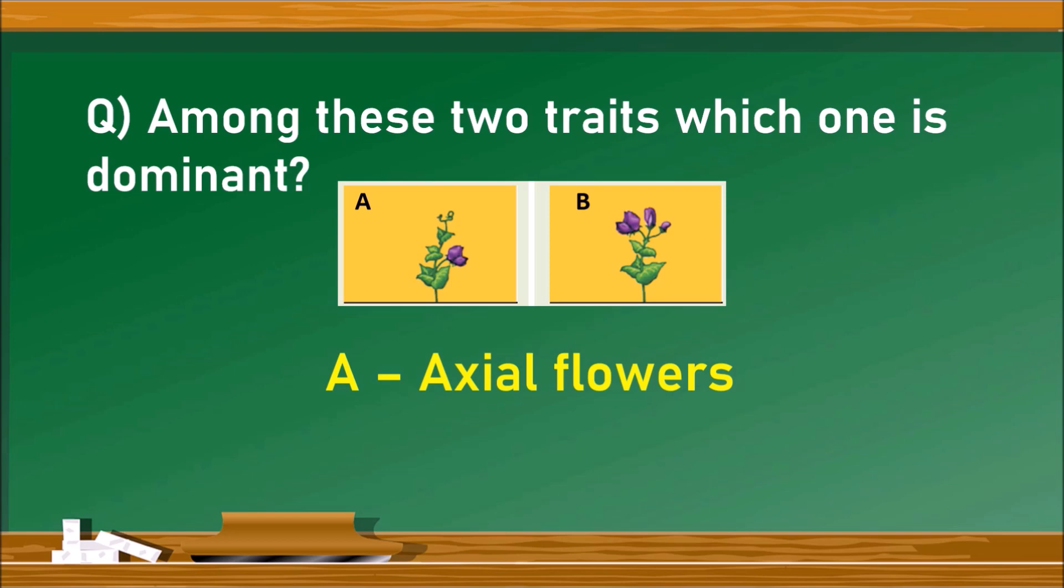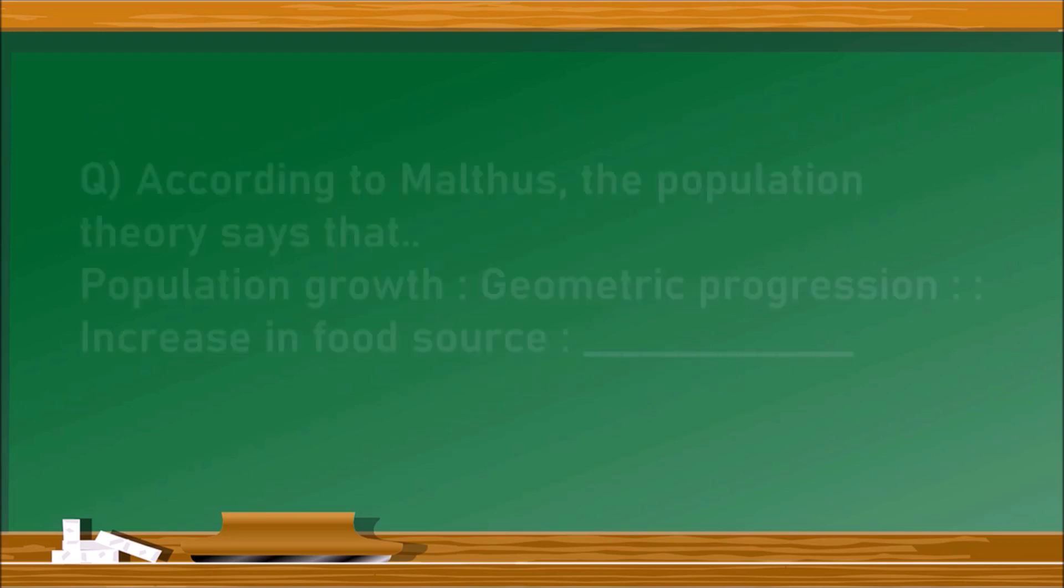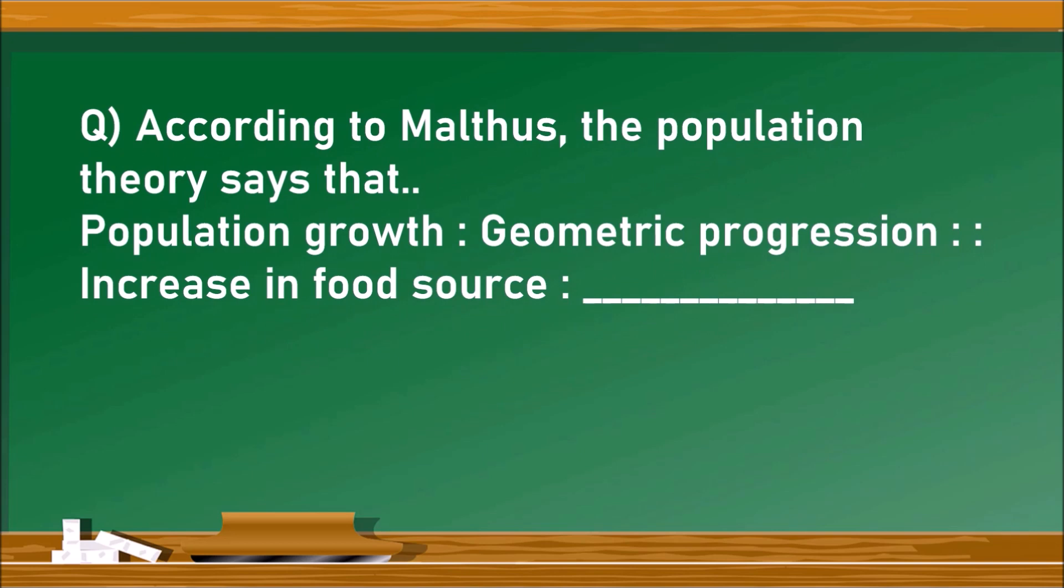Next question: According to Malthus, the population theory says that population growth follows geometric progression, whereas increase in food source follows arithmetic progression. Population grows geometrically: 1, 2, 4, 8, 16, 32 - multiplying rapidly. Food source grows arithmetically: 1, 2, 3, 4, 5, 6 - growing slowly. There is a large difference between population growth and food source growth.